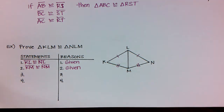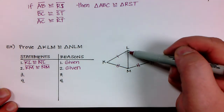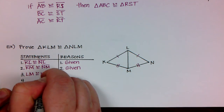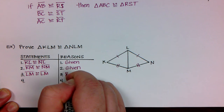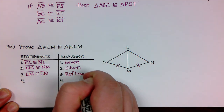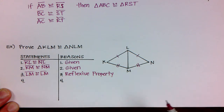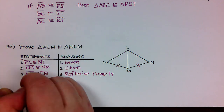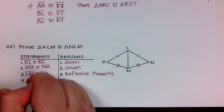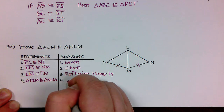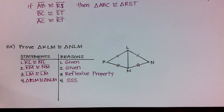I can see that both triangles share side LM, so I can say that LM is congruent to LM because of the Reflexive Property. Look at that — I've proven that all three sides of one triangle are congruent to the three sides of the other triangle. So triangle KLM is congruent to triangle NLM because of Side-Side-Side.